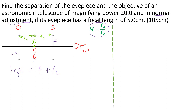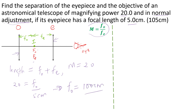Given magnification is 20, and magnification equals F-naught over Fe, we have 20 equals F-naught over 5 centimeters, which gives F-naught equal to 100 centimeters. The separation between the lenses is the length of the telescope: 100 plus 5, giving 105 centimeters.